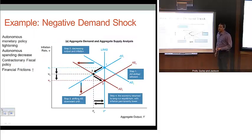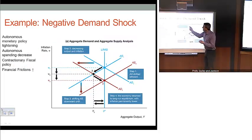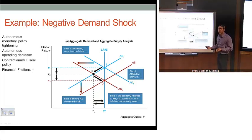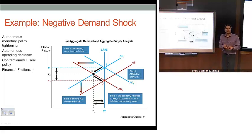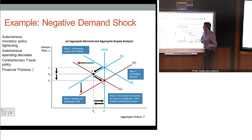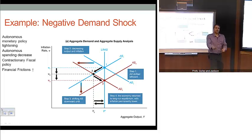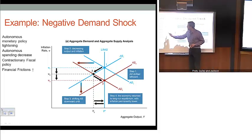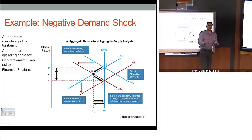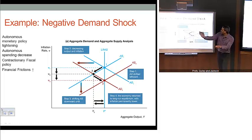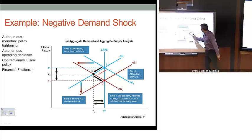Here's an example of a negative demand shock, which comes through the opposite factors: an autonomous monetary policy tightening (R bar goes up), autonomous spending decreases (C bar, I bar, NX bar decline), contractionary fiscal policy (increases in taxes or declines in government spending), and if financial frictions rise — reflected in higher credit spreads. All those things push our aggregate demand curve to the left.